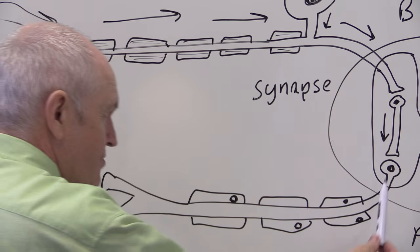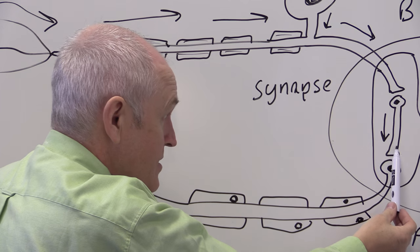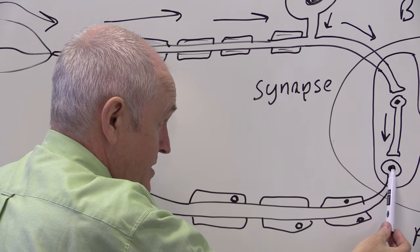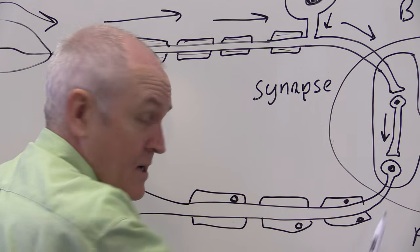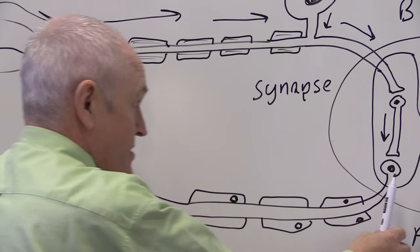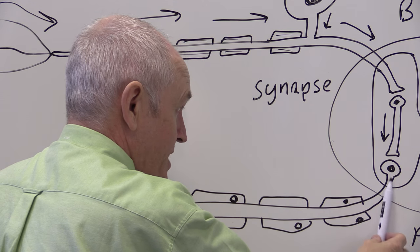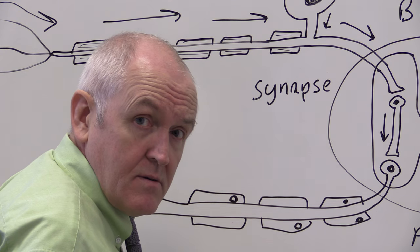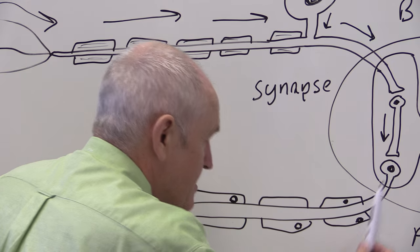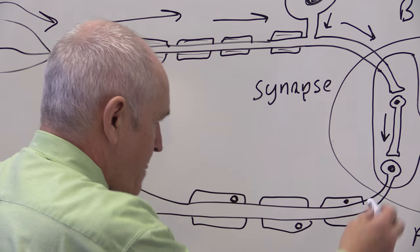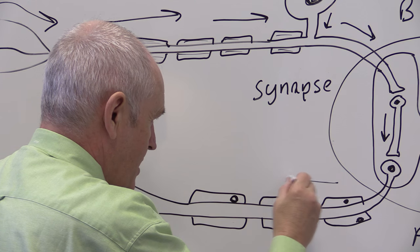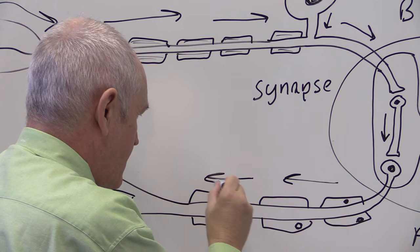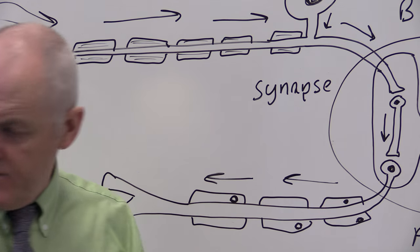So from the relay neuron or the interneuron synapsing across to the cell body of the motor neuron, that causes the motor neuron to develop, or to generate, a new neuronal electrical impulse. It depolarizes the cell body, and that impulse then travels out along the axon of the motor neuron.